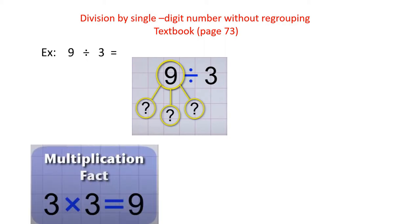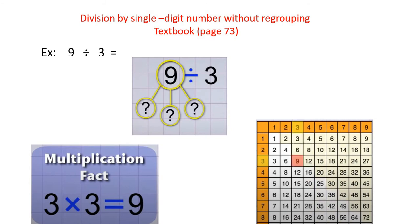You have to remember the multiplication fact: 3 times 3 equals 9. So you remember the times table. Find this number — it's 3 here — and look at the times table for 3. If you multiply it with 1, 2, 3, and so on, you will find number 9 on the times table of 3.